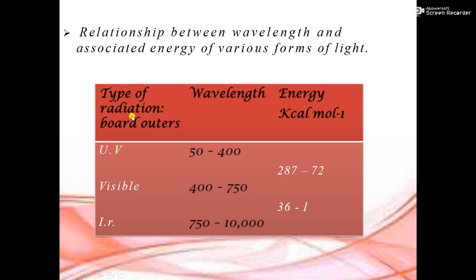Looking at the types of radiation: UV light has a wavelength of 50 to 400 nanometres, visible light is 400 to 750 nanometres, and infrared radiation is 750 to 10,000 nanometres. The corresponding energy in kilocalories per mole is 287 to 72 for UV, and 36 to 1 to 36 for visible and infrared.